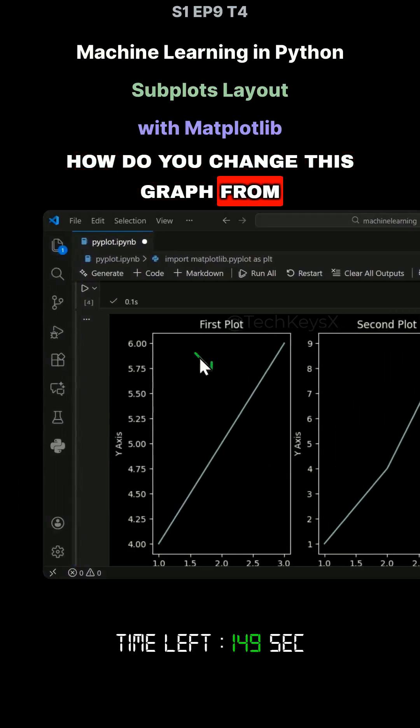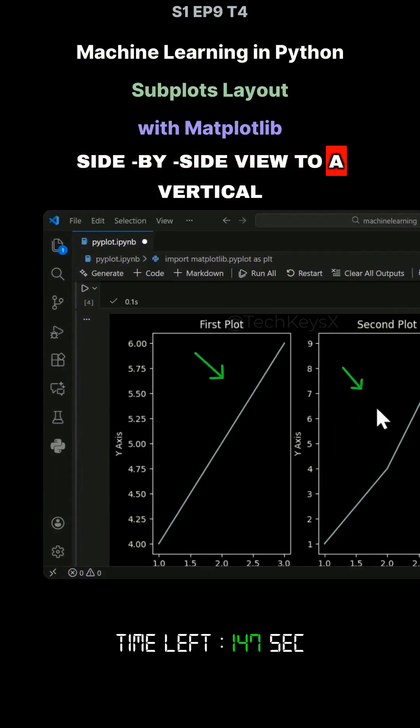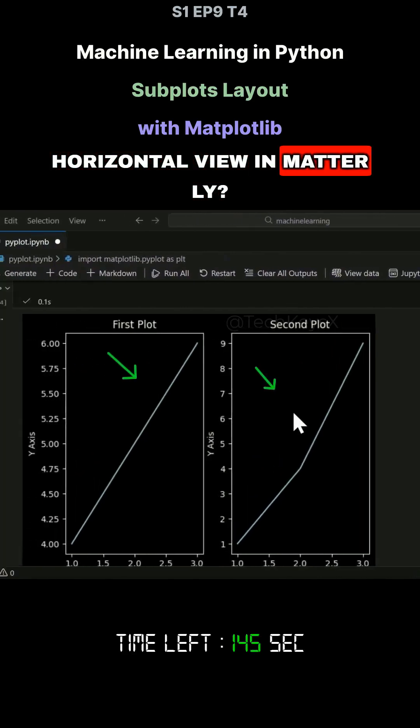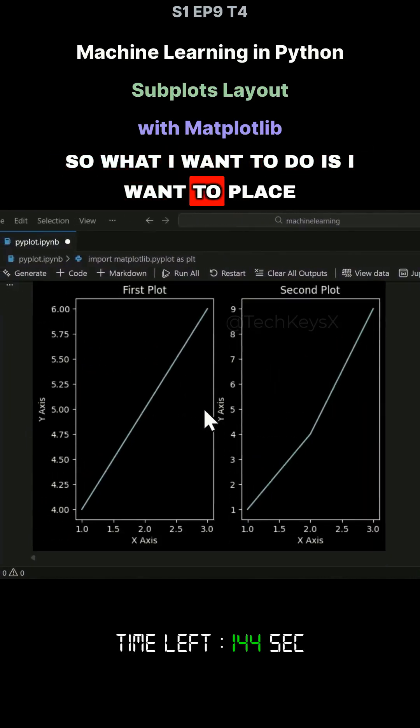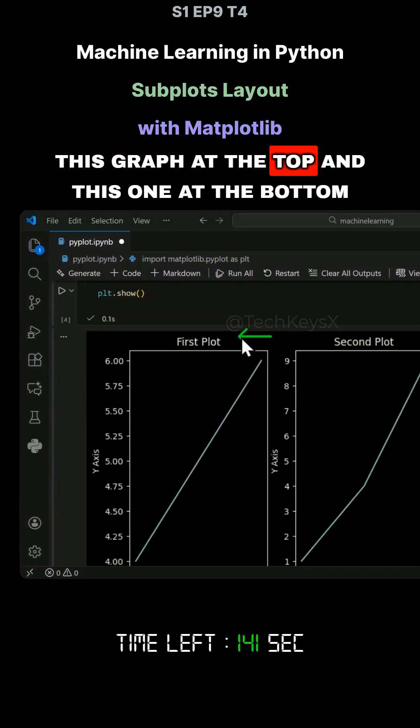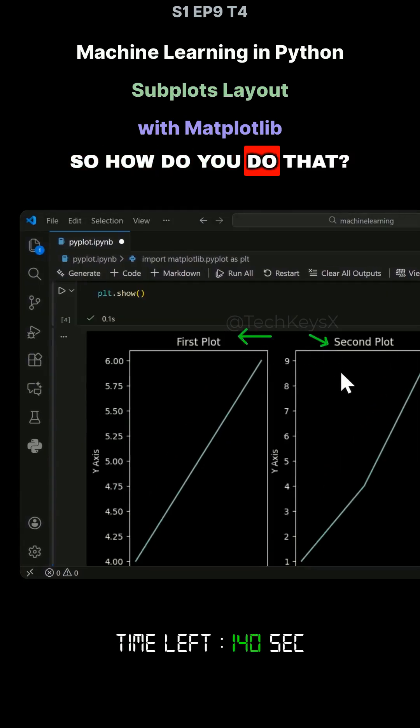How do you change this graph from side-by-side view to a vertical horizontal view in matplotlib? So what I want to do is I want to place this graph at the top and this one at the bottom. So how do you do that?